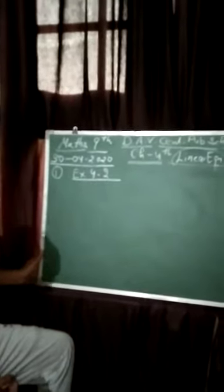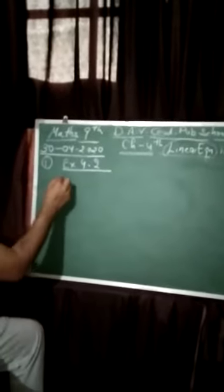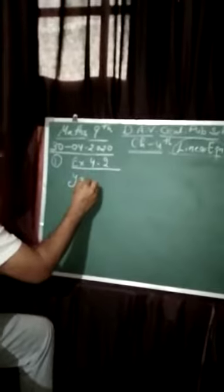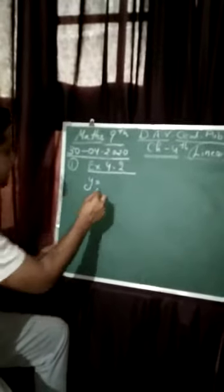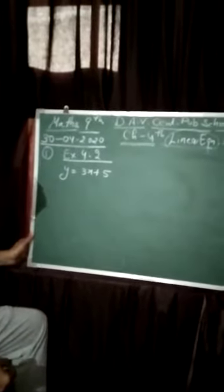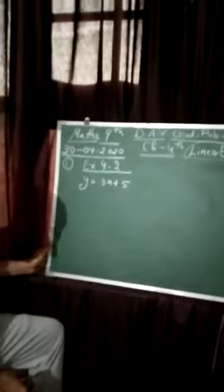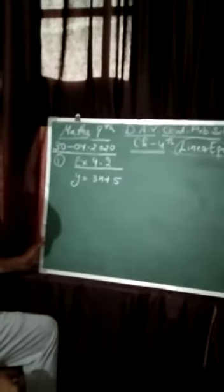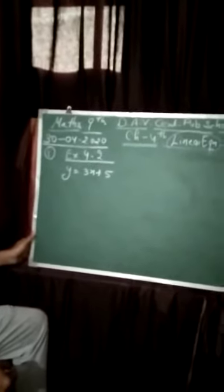In exercise 4.2, our first question, we have an equation y is equal to 3x plus 5. That's our equation and we have to find whether it has a unique solution, only two solutions, or infinitely many solutions.